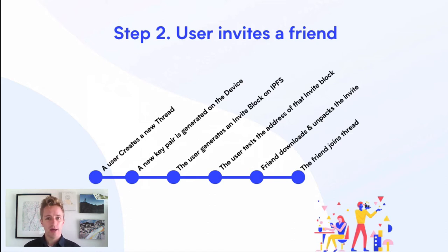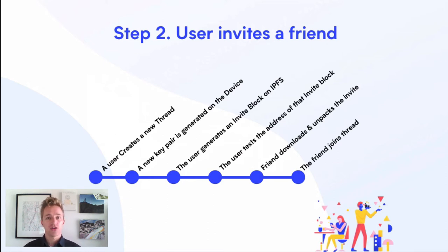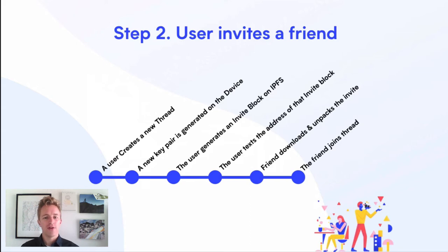That link will say 'I have this thread, come join it.' When the friend clicks it, it opens in Textile Photos. The app grabs the invite block plus the one-time use key contained in the link, goes to IPFS, fetches the private block, and inside is all the information necessary to join the private thread. The friend joins the thread and now the users can exchange photos privately. That key pair generated specific to the thread — now only those two users have that private key. Each of them can write photos and share them in this thread, and only those two will ever be able to see it.